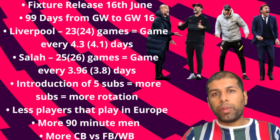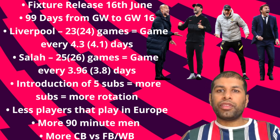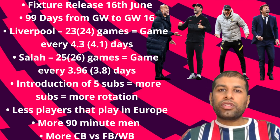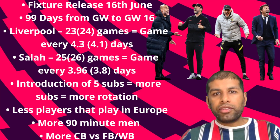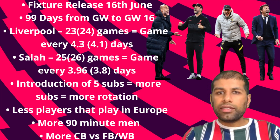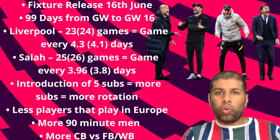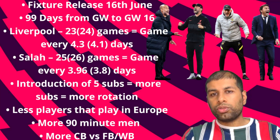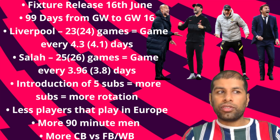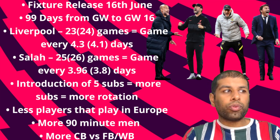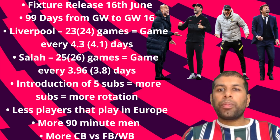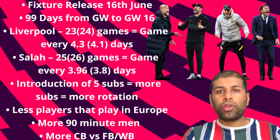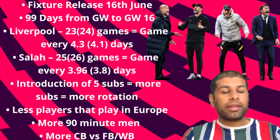Moving on to part three — how will the World Cup in the middle of the season affect us, and how will the schedule affect FPL for the 22-23 season? First thing to note: fixtures are released on the 16th of June at 9am UK time — pencil that in your diaries. There are 99 days from game week one to game week 16. That might seem like a reasonable amount, but factor in European games and the Carabao Cup — it really doesn't feel like a huge amount.